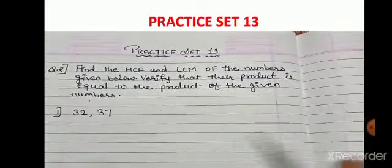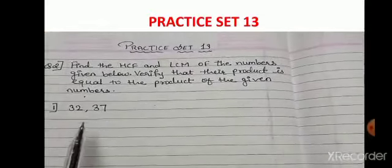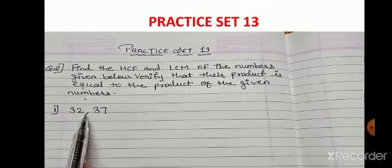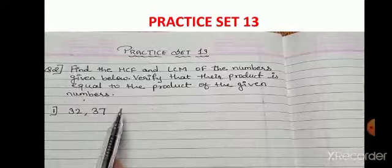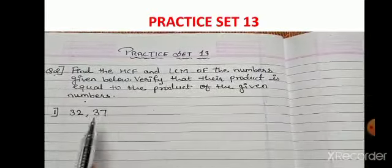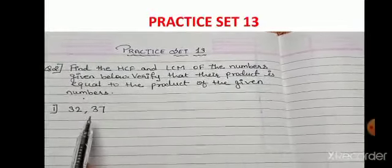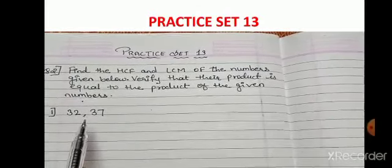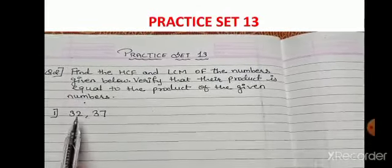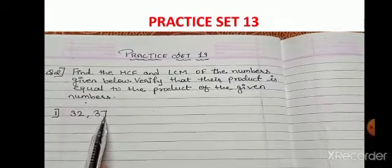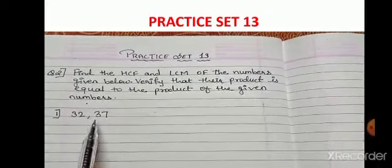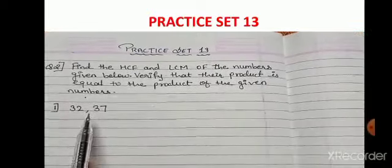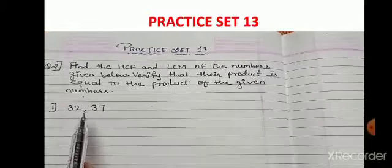We have to verify whether the product of the given numbers equals the product of HCF and LCM. For finding the HCF and LCM we need the factors. As you can see, 32 and 37 are not divisible by a single common number, which means there is no common factor.